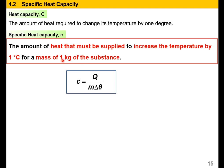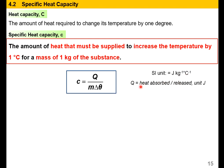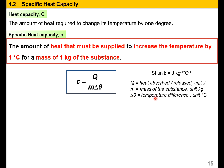From this definition, we can get the formula: small c equals to Q over m delta theta. The SI unit for specific heat capacity is joules per kg per degree Celsius, where Q is the heat absorbed or released in joules, M is the mass of the substance in kg, and delta theta is the temperature difference in degrees Celsius.